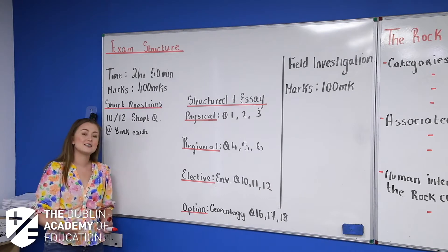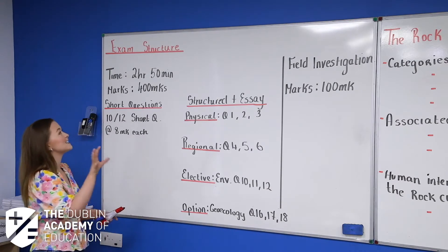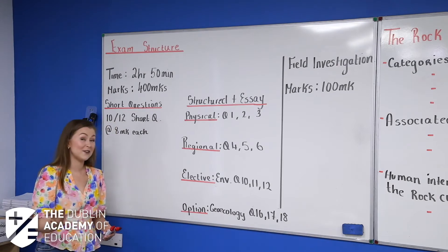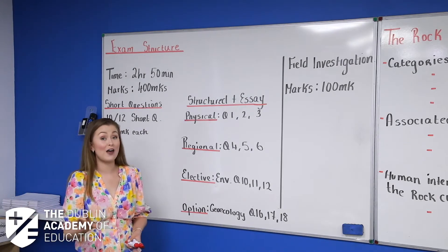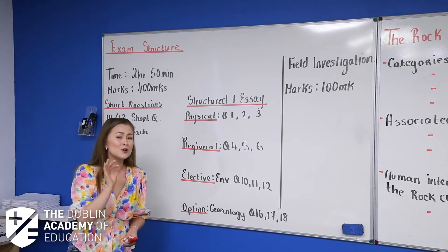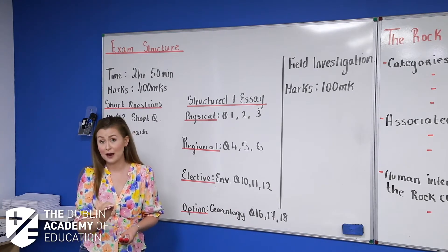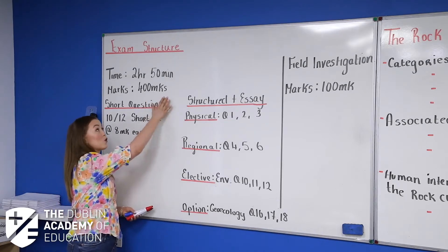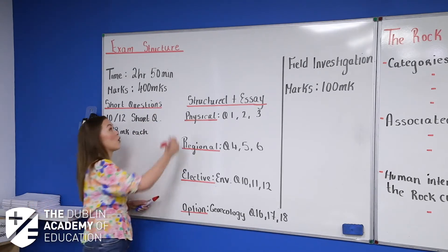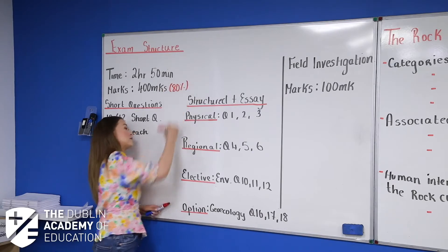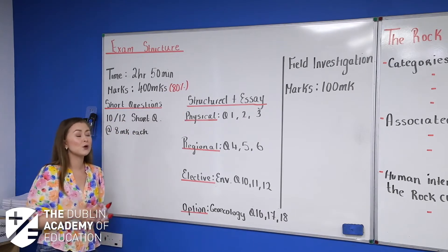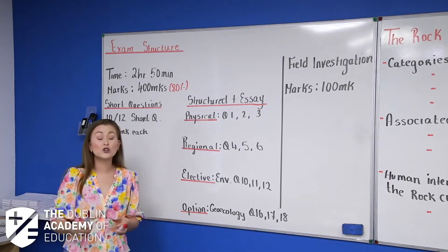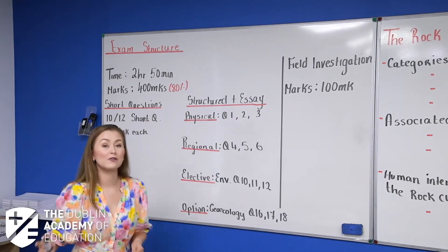So your exam, your actual written exam which is due in 2021, is a two hour and 50 minute exam, just under that three hour marker. And let me tell you, that is a really tight three hours or two hours and 50 minutes. Your exam is worth 400 marks, so 80% of your final grade. Now, that is a lot, but you have to remember, 80% of your final grade, which means the other 20% is actually coming from your field study.